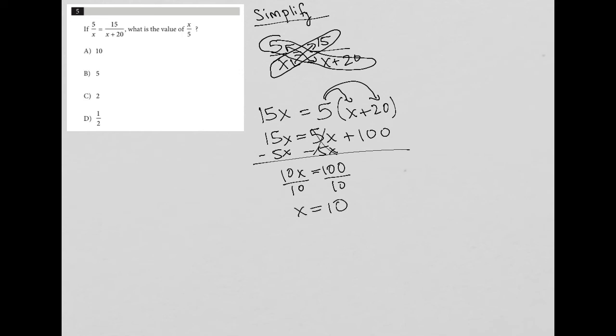Now why is this important? Well, you may not have done this because the question actually asked for the value of x over 5, so you may have tried some other methods here.